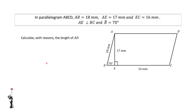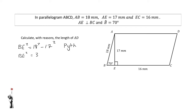Furthermore, calculate with reasons the length of AD. I know that EC is equal to 16 mm. I still need to find the length for BE, since AD will be the exact same length as BC and not EC. Therefore, I first need to calculate BE. Since this is a right-angled triangle, I may use Pythagoras, and therefore BE squared is equal to 18 squared minus 17 squared. Therefore, BE squared is equal to 35, and BE is equal to the square root of 35 mm.